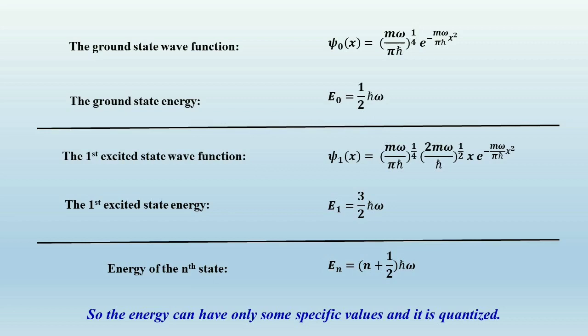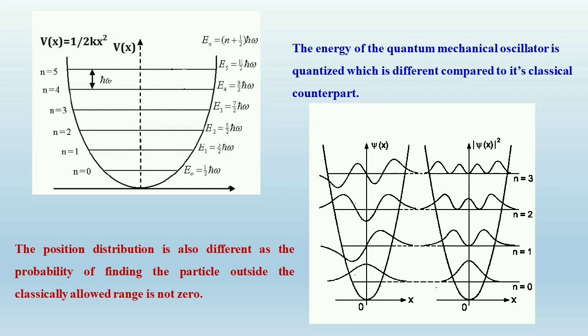It is clear that energy cannot take any arbitrary value as in the classical harmonic oscillator — it must take particular values (n plus ½)ħω, so energy is quantized. The energy states are plotted and, as the quantum number increases (n equals 0, 1, 2, ...), the energies E₀, E₁, E₂ follow the relation (n plus ½)ħω. All energy states are equally spaced by a difference of ħω. This is different from the classical counterpart, where any value of energy was possible — the quantum mechanical oscillator has quantized energy.